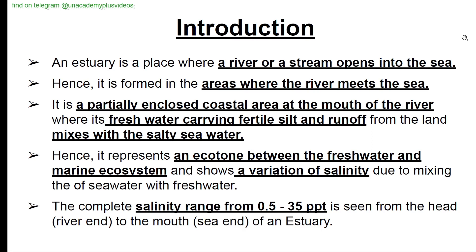An estuary is formed where the river meets the sea. It is a partially enclosed coastal area at the mouth of the river where freshwater carrying fertile silt and runoff from the land meets the salty sea water. It represents an ecotone between freshwater and marine ecosystems and shows a variation of salinity. The complete salinity range from 0.5 to 35 parts per thousand (ppt) is seen from the river head to the sea end of an estuary.